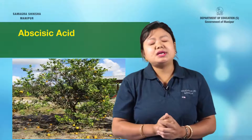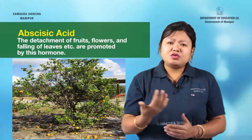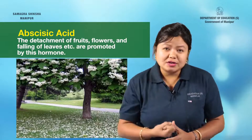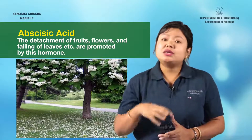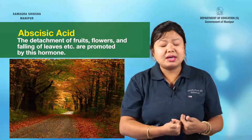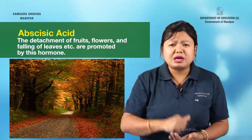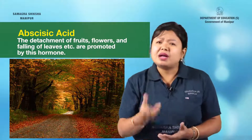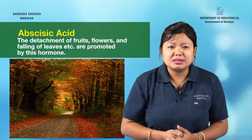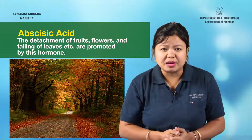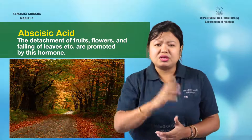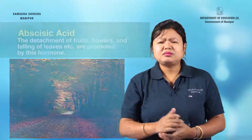Abscisic acid also helps in the falling of fruits, flowers, and leaves. It promotes bud dormancy as well. That's about abscisic acid, a growth inhibitor hormone.